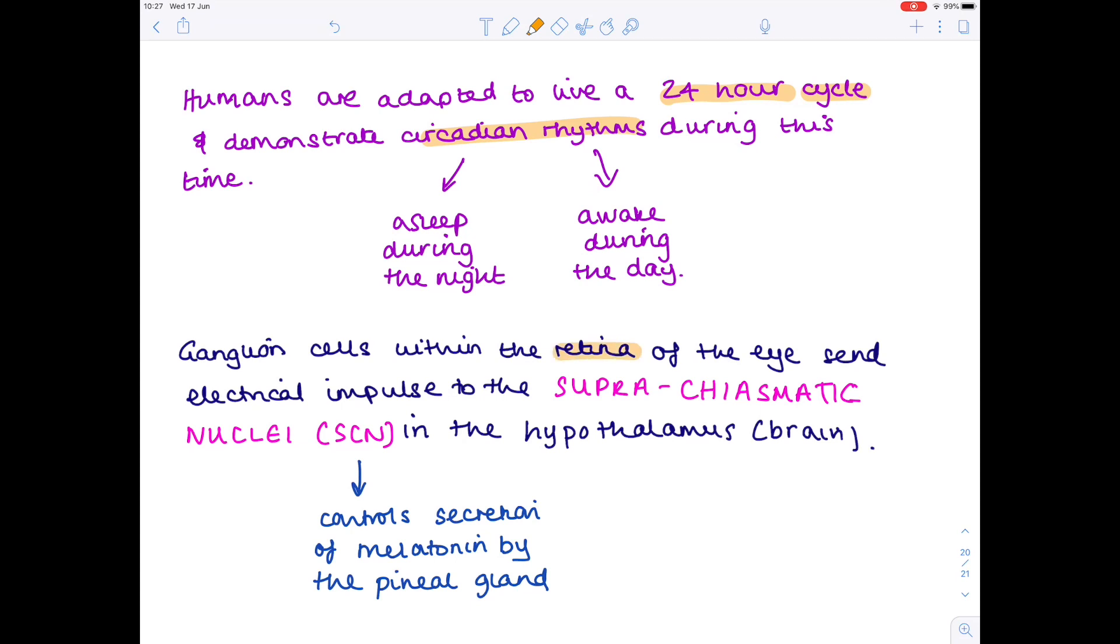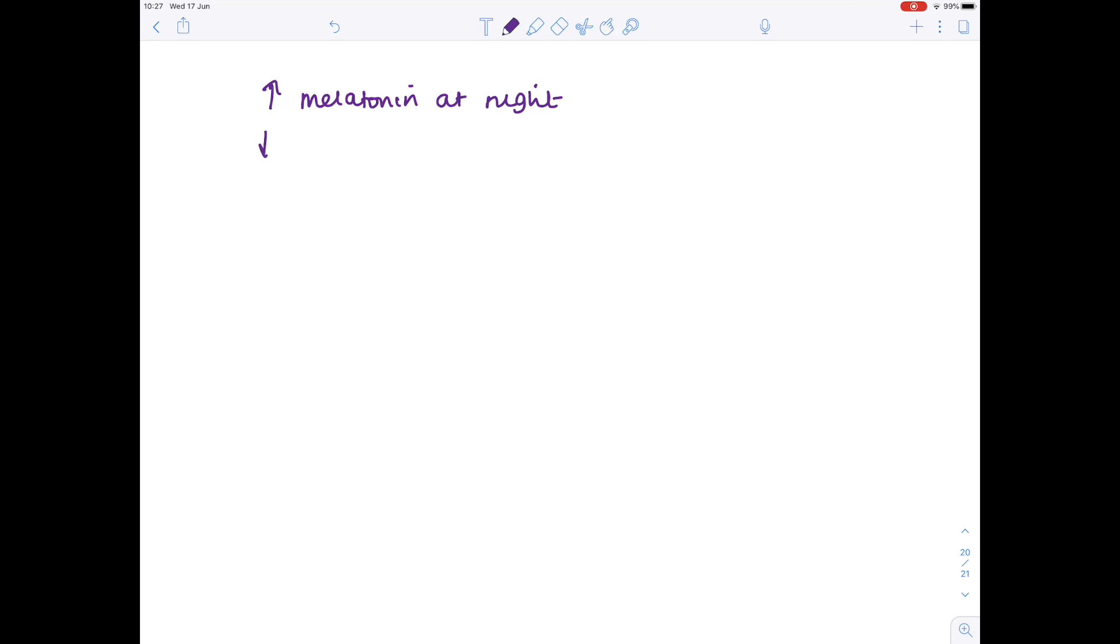Well, it's through the retina, so the ganglion cells of the retina which send electrical impulses to the suprachiasmatic nucleus in the hypothalamus, and this controls the pineal gland's secretion of the hormone melatonin. Now melatonin levels increase at night and they decrease during the day.